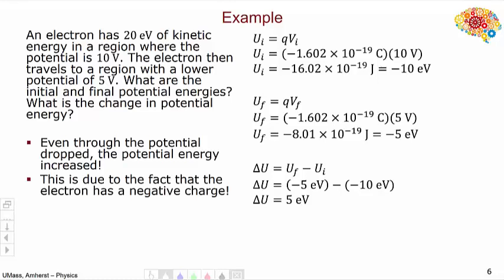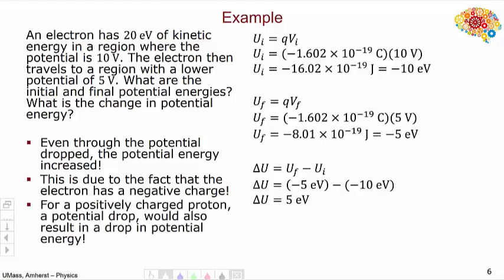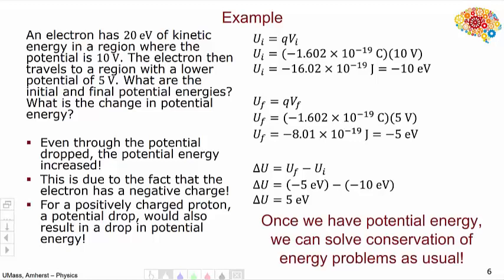Throughout our calculations, we've been multiplying the potential V by a negative Q. If we had instead considered a proton, then Q would be positive, and a positive drop in potential would result in a drop in potential energy. Once we have changes in potential energy, we can then move on to solve problems using conservation of energy, as we've been doing throughout this course.